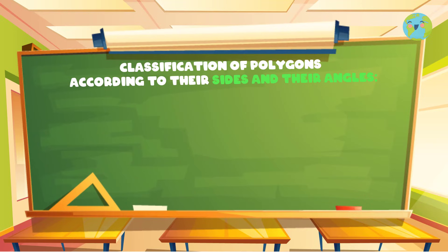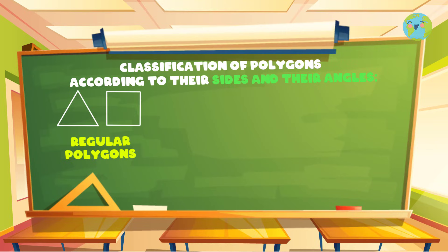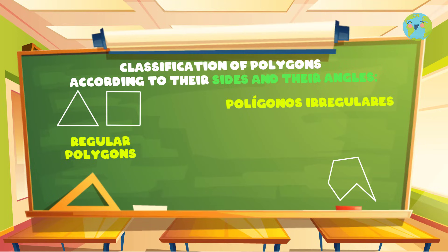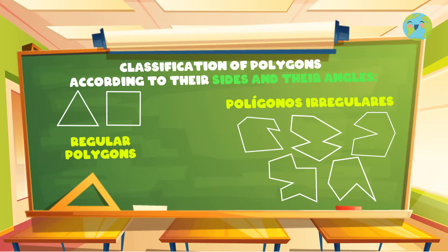We can also classify the polygons according to their sides and their angles. When our polygon has all its sides and angles equal, like this triangle or square, they are called regular polygons. But if our polygon has one or more sides and angles of a different measure, they are called irregular polygons, like these.